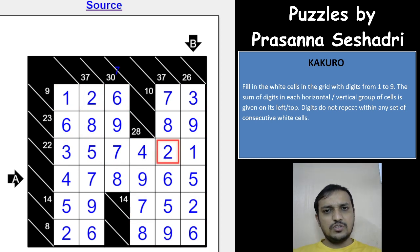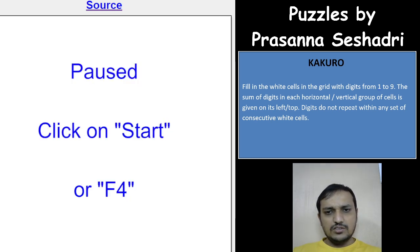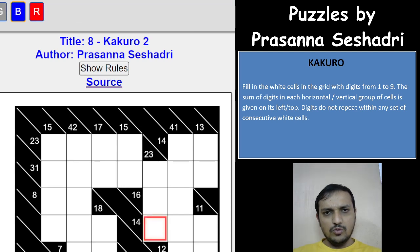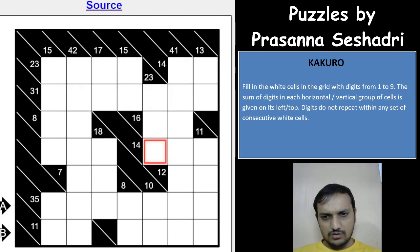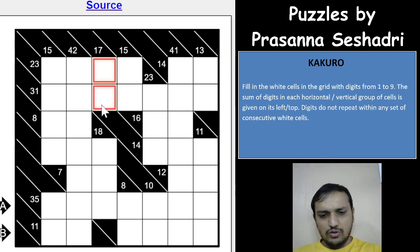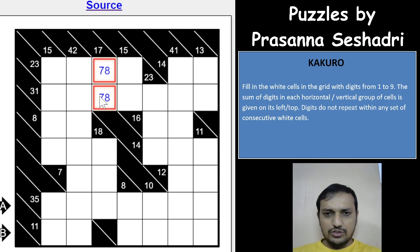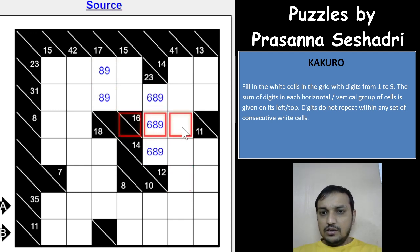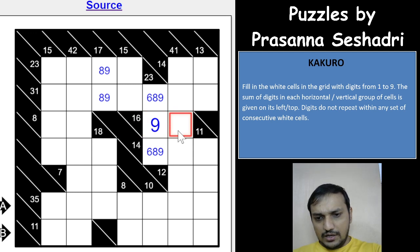That was the easy kakuro puzzle. Now moving on to the second puzzle of medium difficulty. A few quick deductions: 17 with two cells is always 8 and 9, just like in killer sudoku. For 23, it's 6, 8, and 9. For 16 it's 7 and 9 — so this cell is 9 and this one is 7.